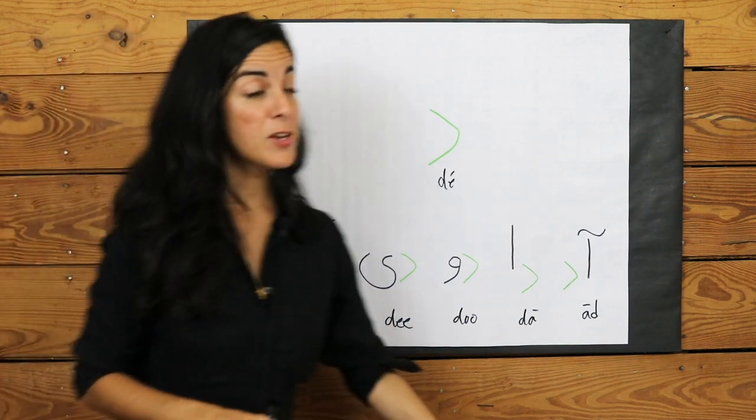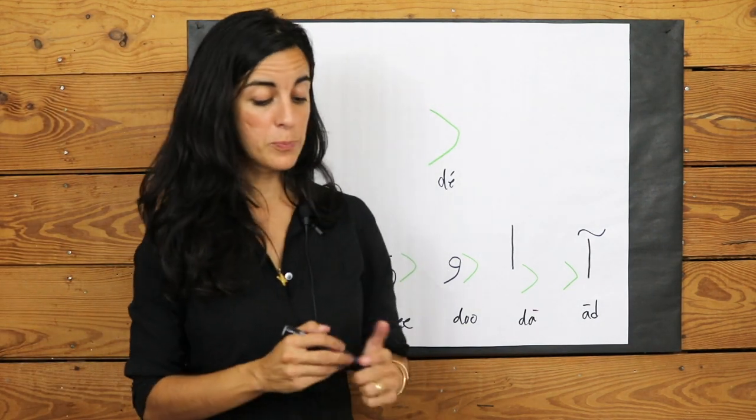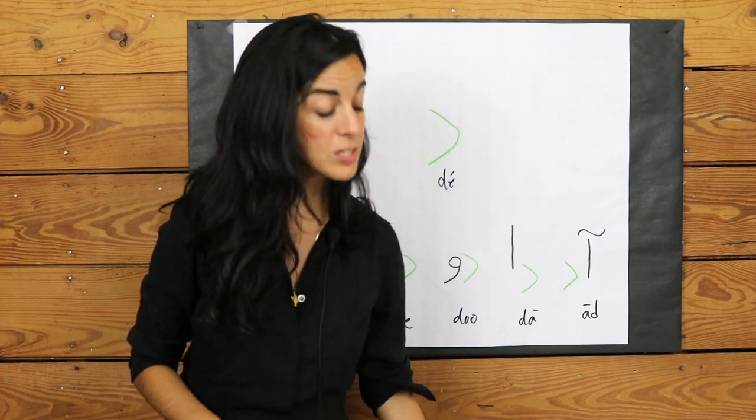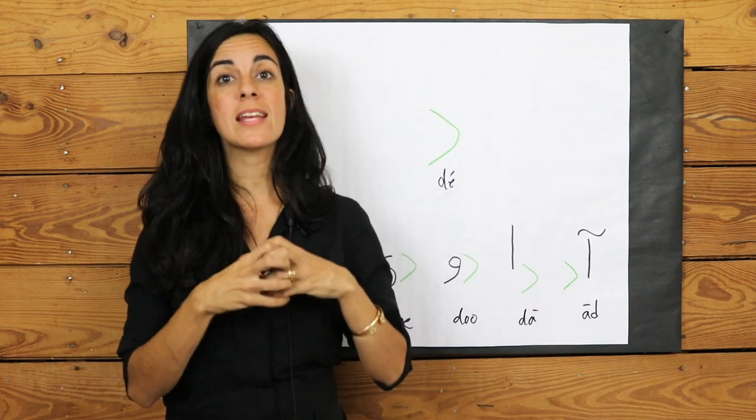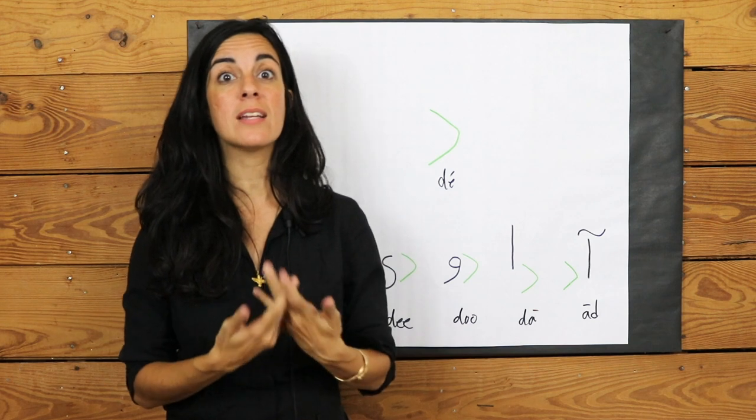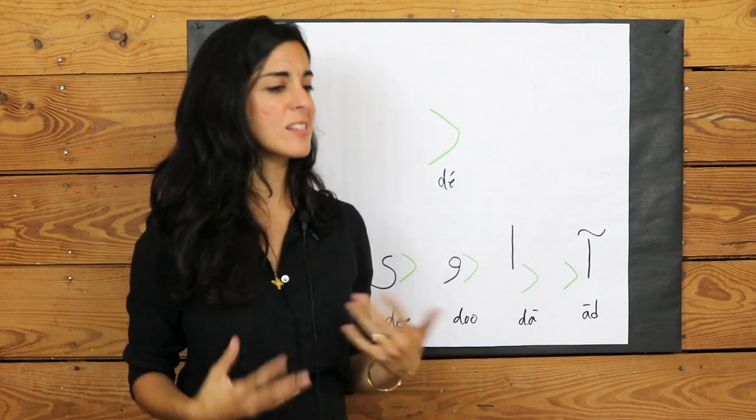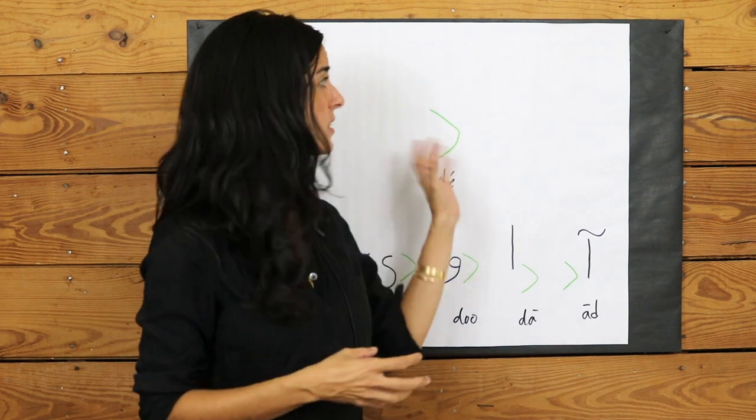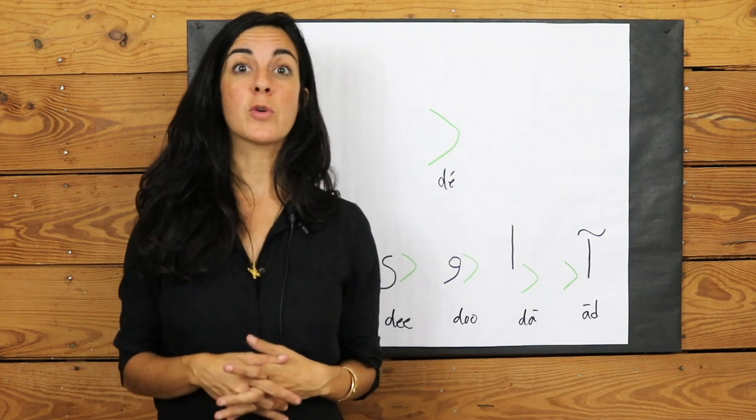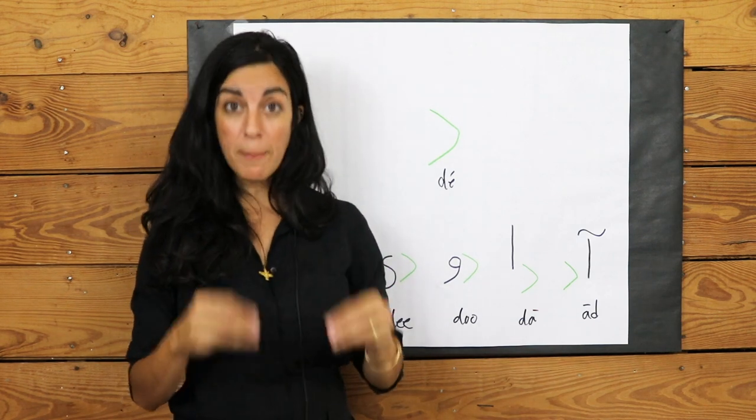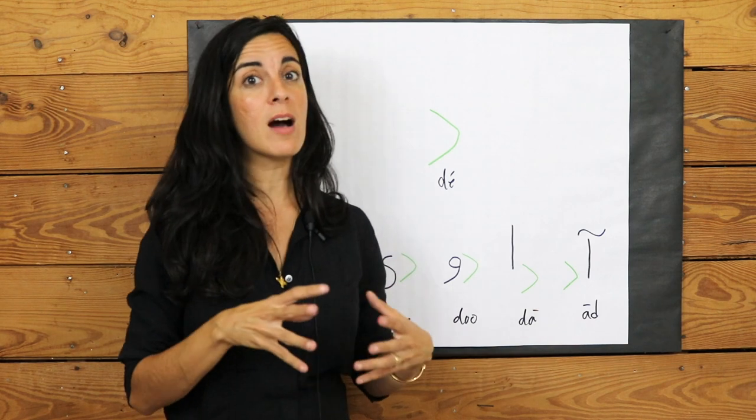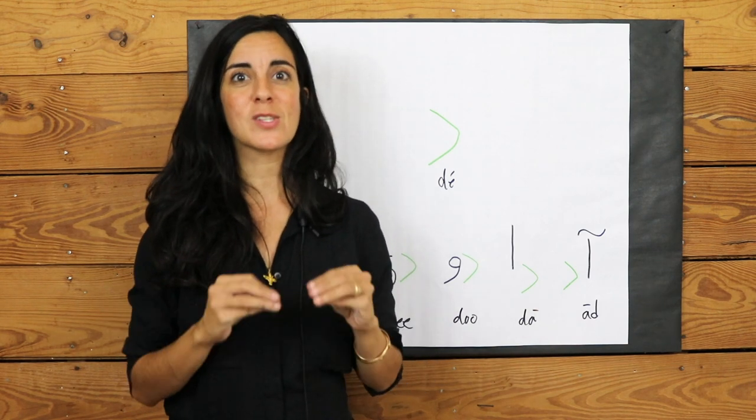So there you go, a little introduction into the Persian alphabet and Persian vowels. Once you understand these vowels, you can really read and write very quickly. It doesn't take much to learn these symbols. And next time we're going to learn four of the most popular consonants and how they interact with the vowels. And we're going to take it from there, nice and slowly.